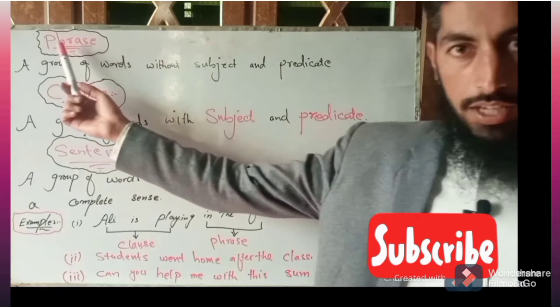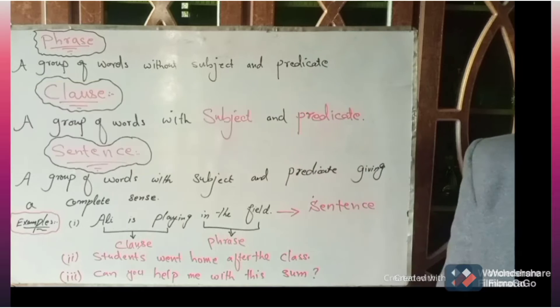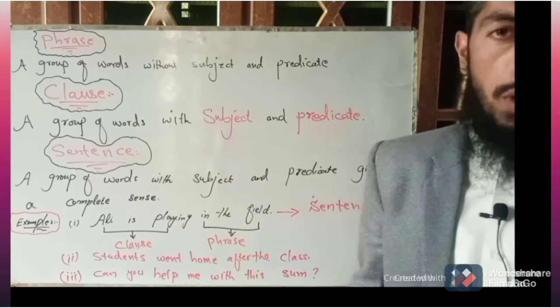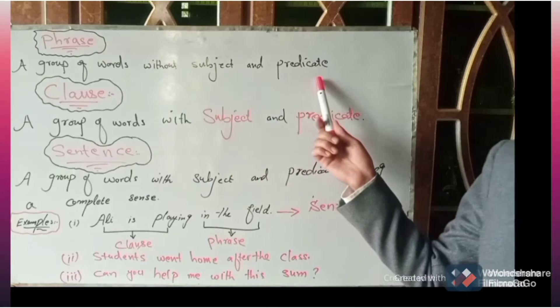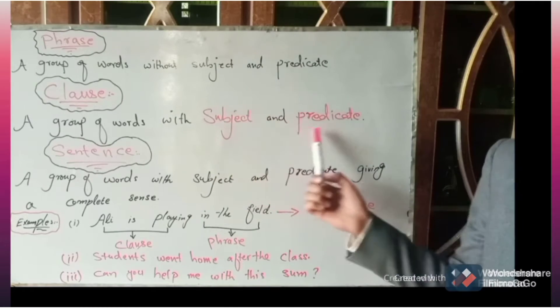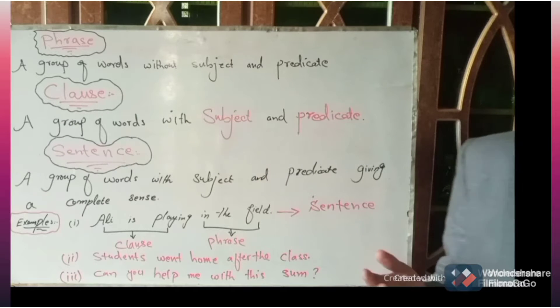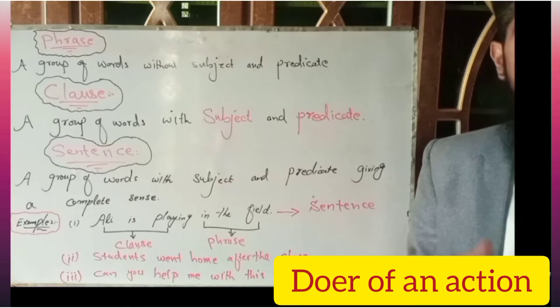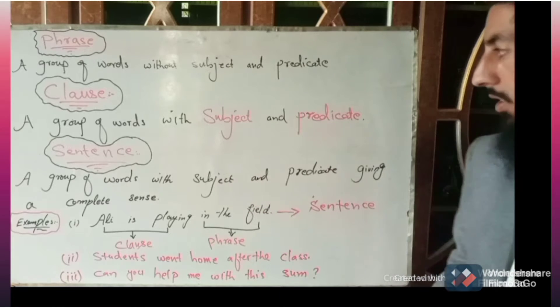First of all, phrase. A group of words without subject and predicate. There are words, two or three words, group of words, but there is no subject and there is no predicate. What is subject and predicate? Subject is the part of sentence we are talking about, the doer, the part of sentence we are talking about. That is called subject.